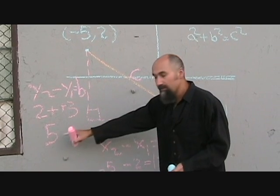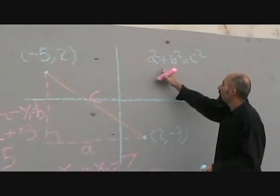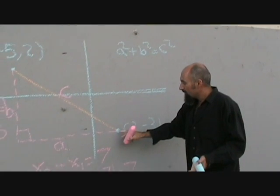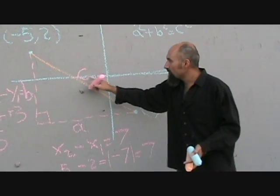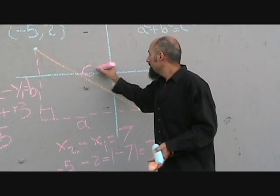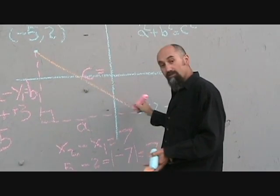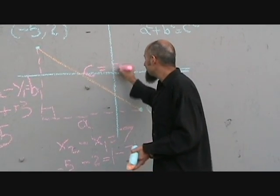So the distance from here to here is 5. Now if we go to our formula, the Pythagorean theorem is this. The symbol that they use for distance between two points, or the distance for a line between two points, is D.